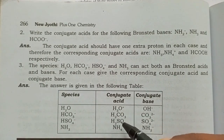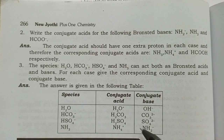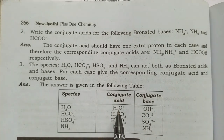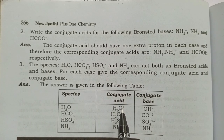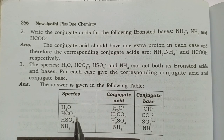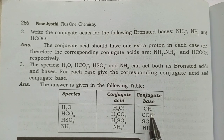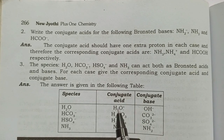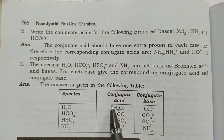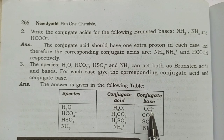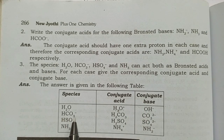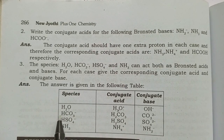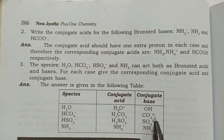This is the corresponding conjugate acid and conjugate base. Water gains H+ to form H3O+ — that is the conjugate acid. Water loses H+ to form OH⁻ — that is the conjugate base. For HCO3⁻: it gains H+ to form H2CO3, which is the conjugate acid. It removes H+ to form CO3²⁻, which is the conjugate base.